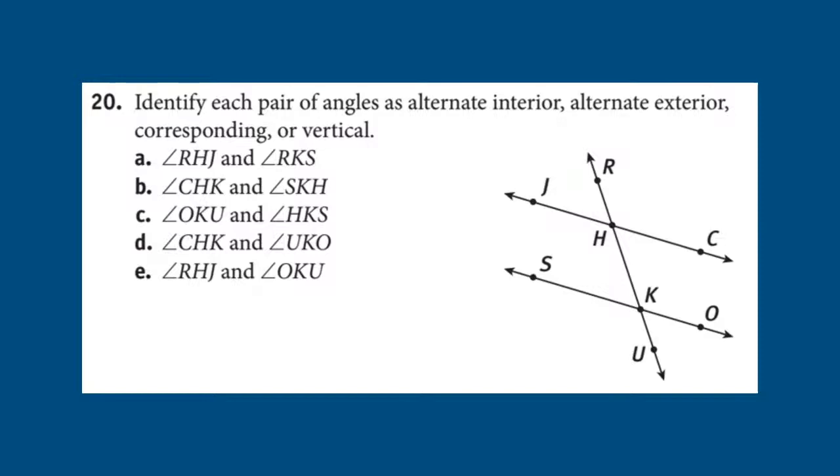And B, CHK, and SKH. I'm going to say those are alternate interior angles. And then, O, K, U, and H, K, S. When I locate both of those, those are vertical. And we're at D, which is angle CHK. And U, K, O are corresponding. And last, I've got R, H, J, and O, K, U. I'm going to say those are alternate exterior angles.